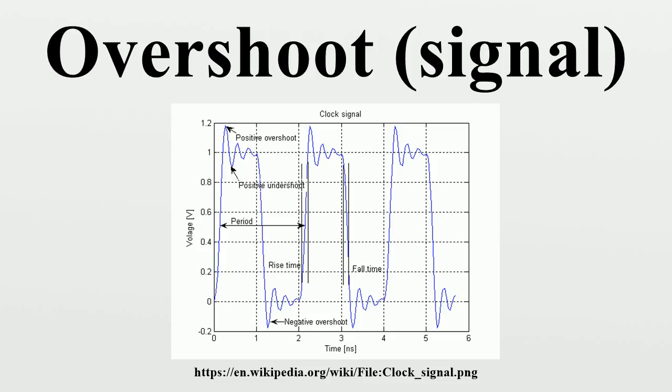Maximum overshoot is defined in Katsuhiko Ogata's discrete time control systems as the maximum peak value of the response curve measured from the desired response of the system.